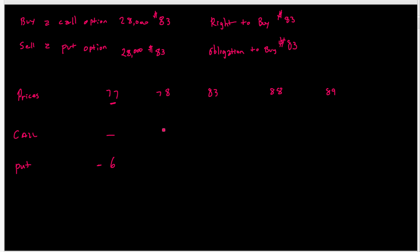At $78 per barrel: she won't exercise the call because she can buy cheaper at the market. The put holder will exercise, forcing her to buy at $83 instead of $78 — a loss of $5 per barrel. At $83, neither party exercises — the spot and strike are equal — so there's no action and no gain or loss.